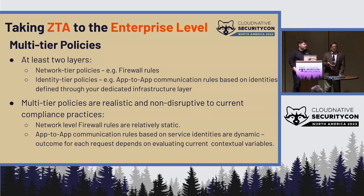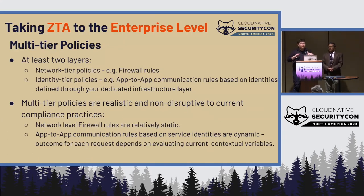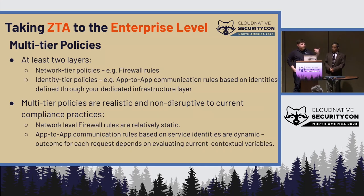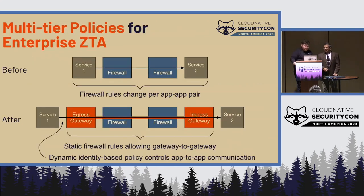This is really about paving a path for organizations and auditors to understand the move from a perimeter model to an identity-based model. We view multi-tiered policies as a stepping stone to facilitate that transition, but also to help with defense in depth — more layers for an attacker to traverse. This schematic diagram shows between which entities network policies apply and where the application layers are.